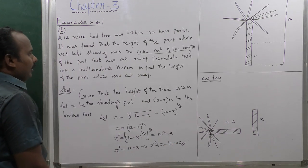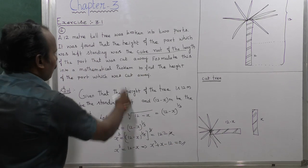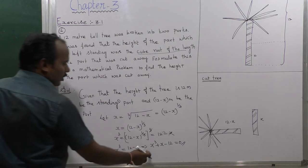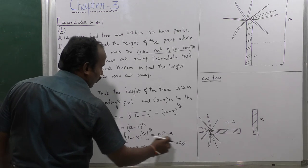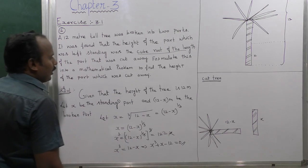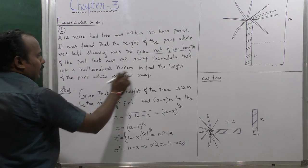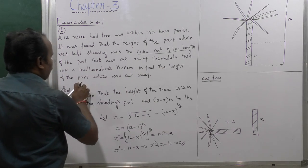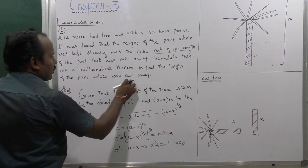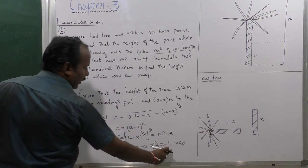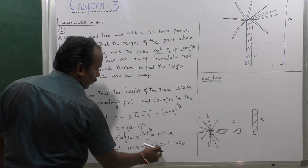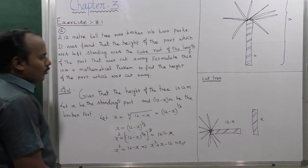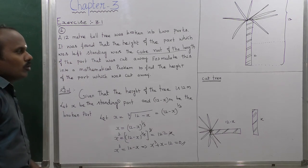That is the mathematical problem formulated. So the equation is formulated. To find the length of the part which is cut away, the remaining equation is x cubed plus x minus 12 equals zero.